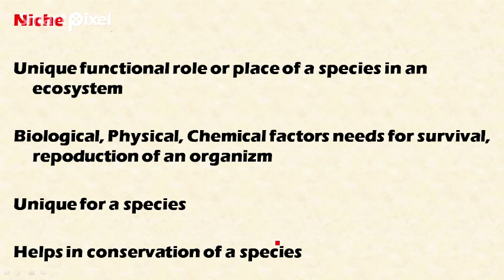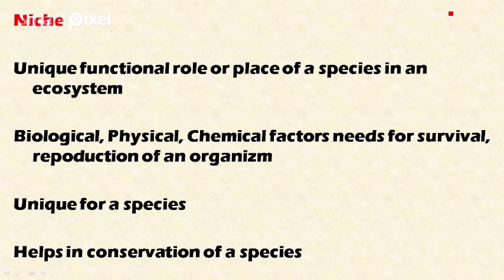The next concept is niche. Niche is the unique functional role or place of a species in an ecosystem. It is both a role and a habitat of a species in an ecosystem, unique to that particular species. This niche provides the biological, physical, and chemical factors needed for the survival and reproduction of the organism.